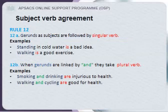Rule twelve — gerunds as subjects are followed by a singular verb. Examples: standing in cold water is a bad idea; walking is a good exercise. When gerunds are linked by and, they take a plural verb. Examples: smoking and drinking are injurious to health; walking and cycling are good for health.